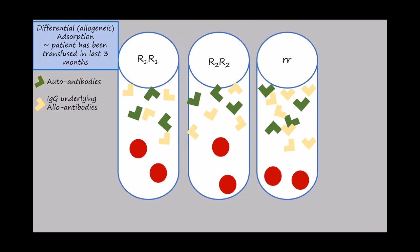But if your patient has been transfused in the last three months, a differential or allogeneic absorption must be performed. This is because there might be donor circulating red cells still in your patient's system.